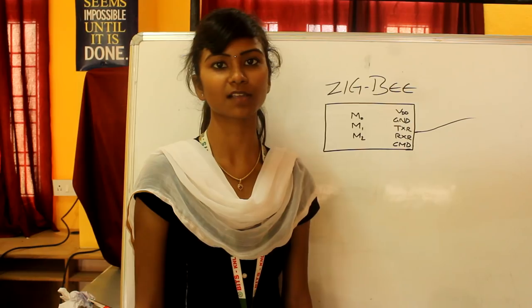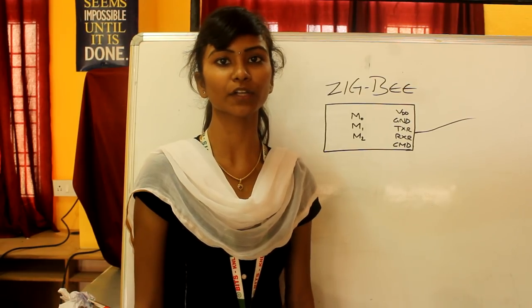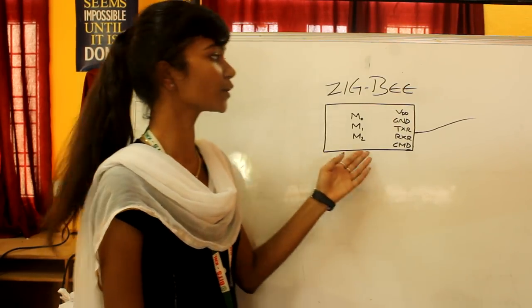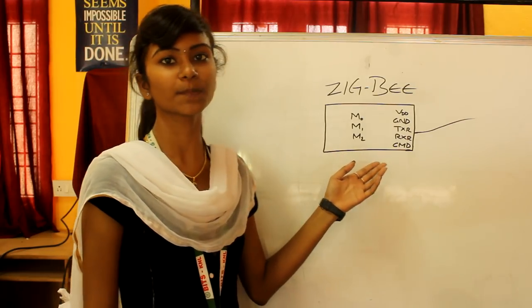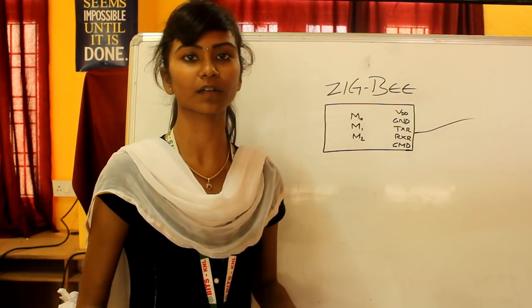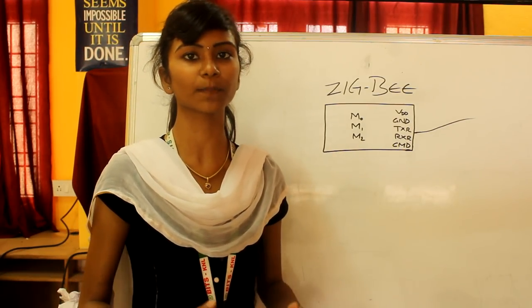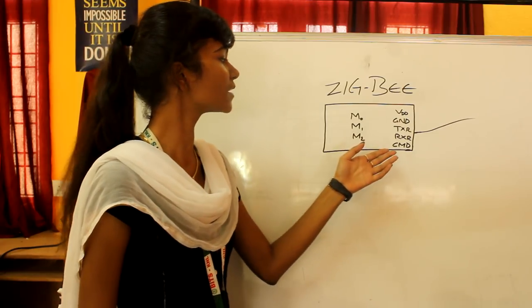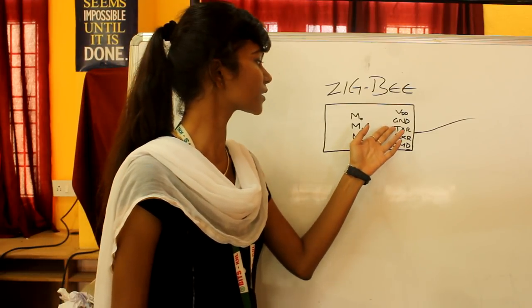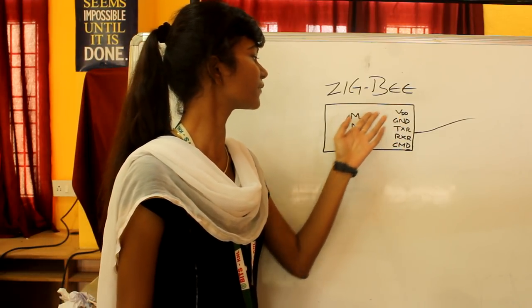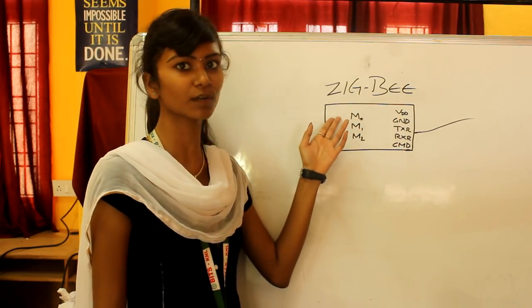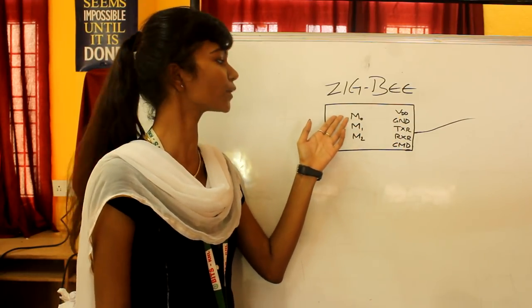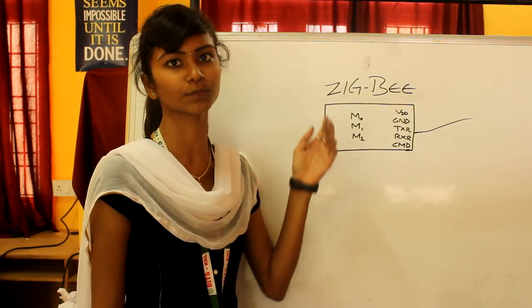This is Kavya. I would like to express the functionality of Zigbee. Zigbee is used to transfer data or any information wirelessly. It has 5 pins: CMD, Ground, Receiver, Transmitter, and VDD. It also has M pins: M0, M1, and M2.